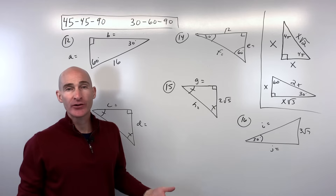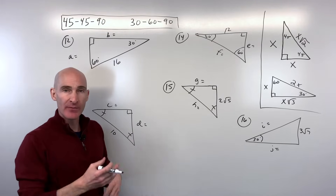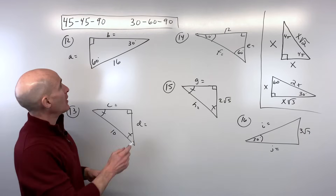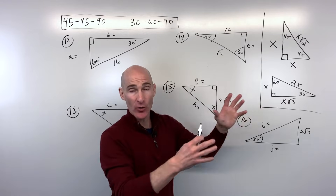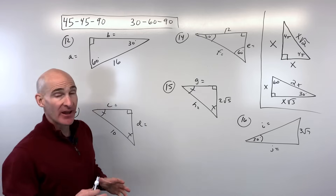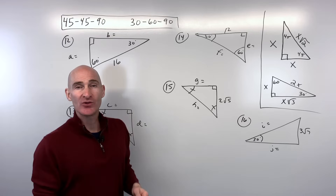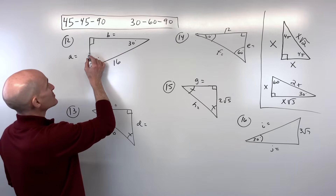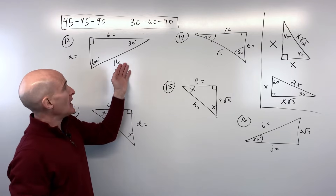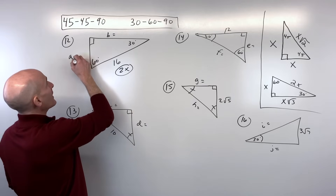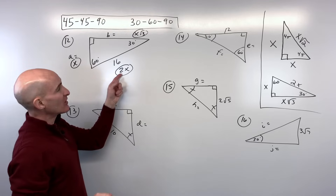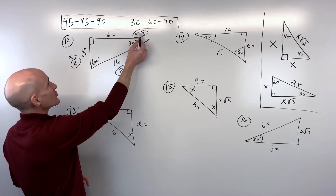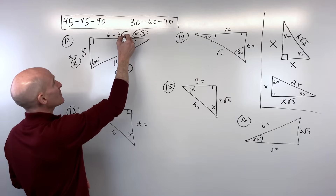Here's an opportunity to practice. For number 12 — the triangle is oriented differently to be more challenging — they're giving us the hypotenuse, the 2x side. Divide by 2 to get the short leg: 16 divided by 2 is 8. Then multiply by √3 to get the longer leg: 8 times √3 is 8√3.